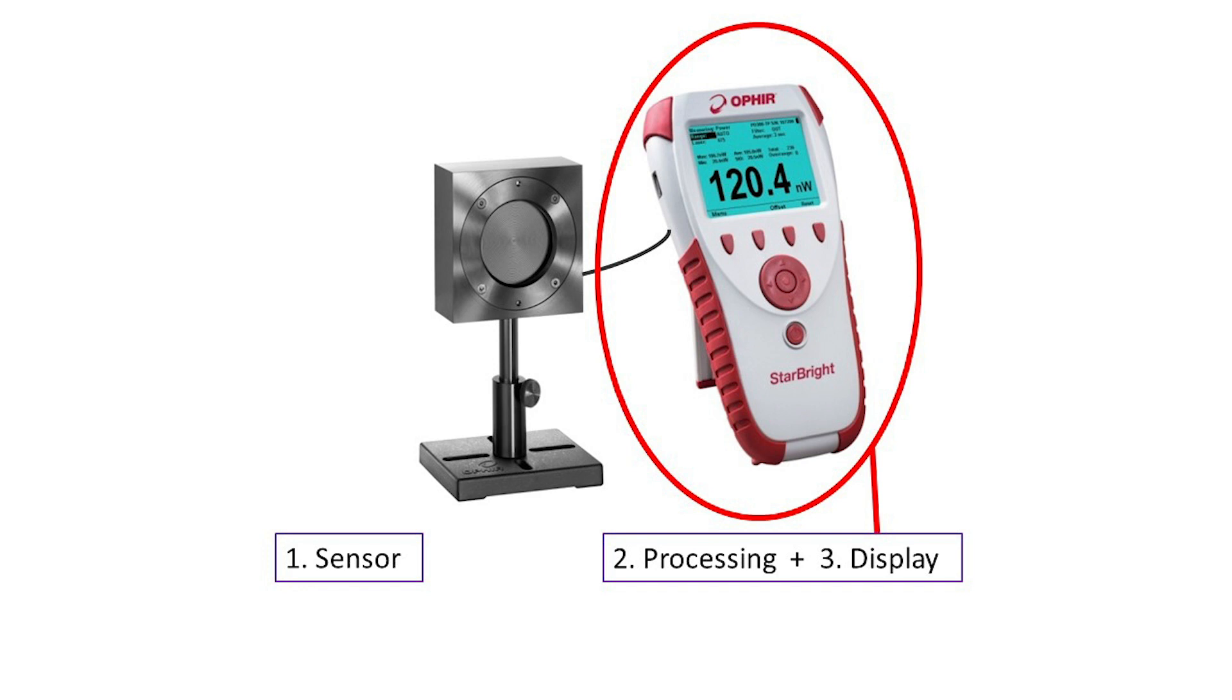The meter receives the sensor's output signal, processes and interprets it to produce a reading of laser power, and then figures out how to turn that reading into a numeric or graphical display on the meter's screen.